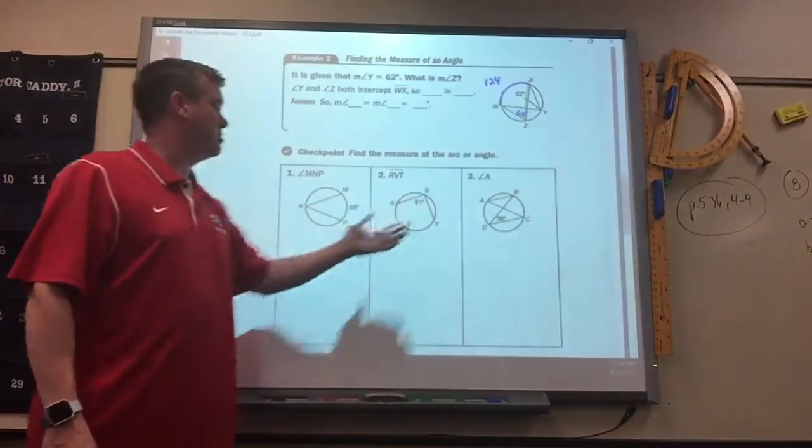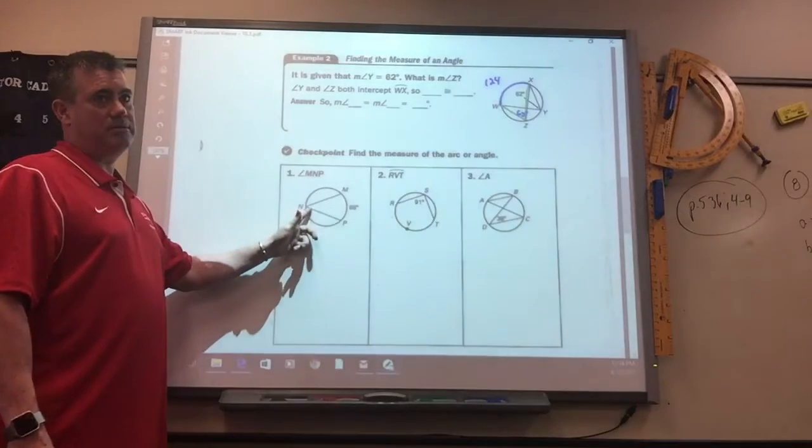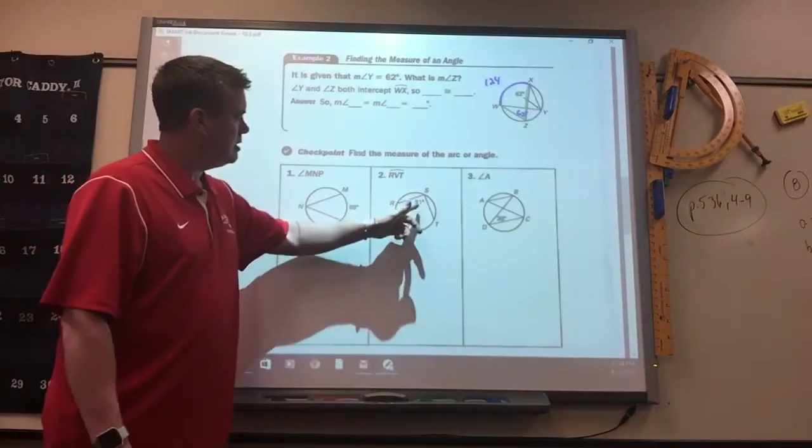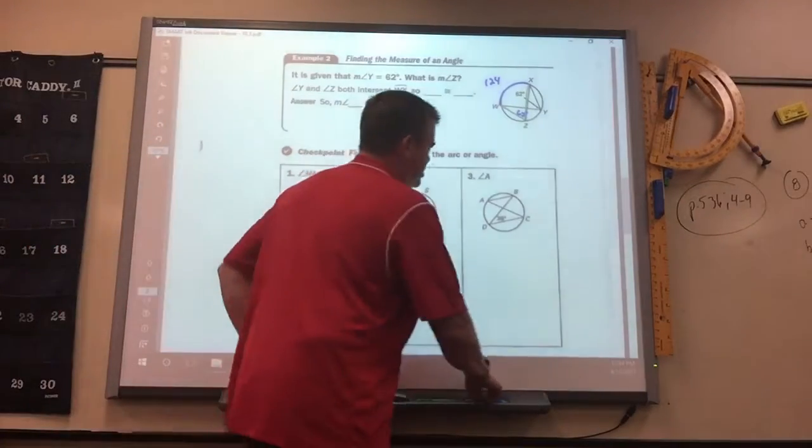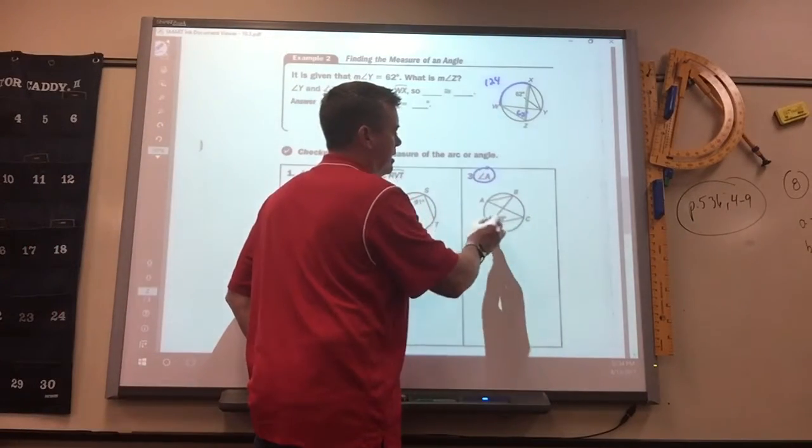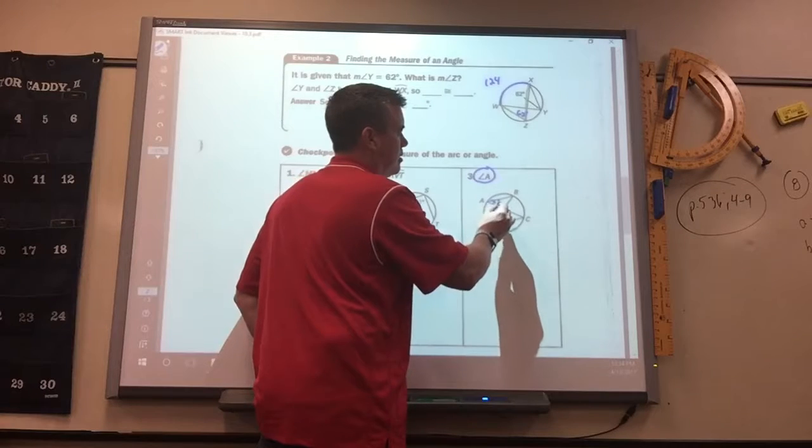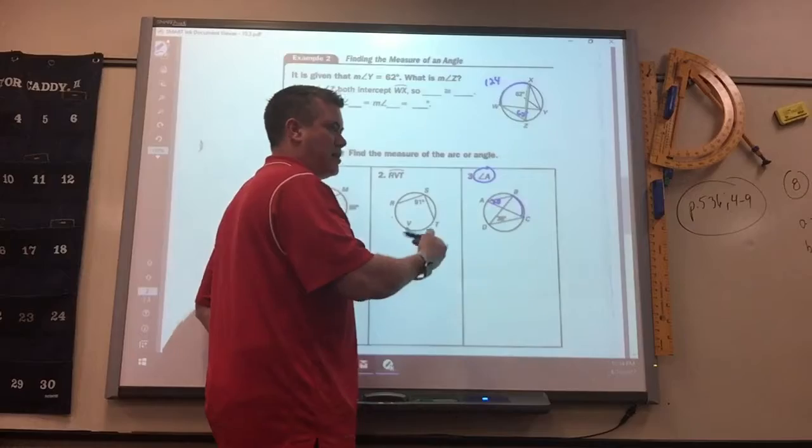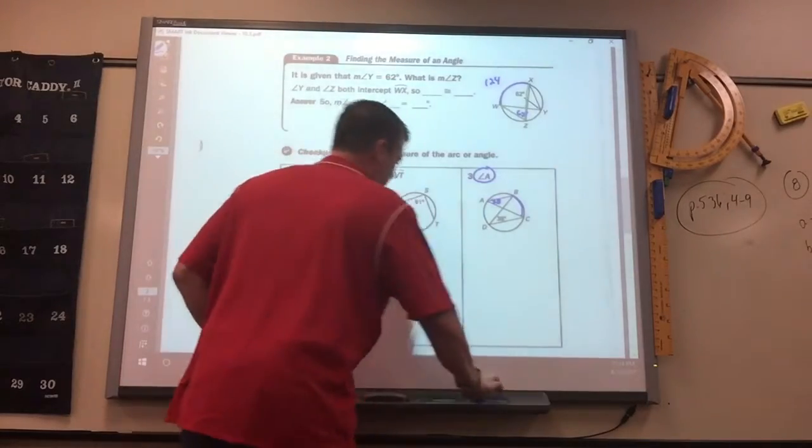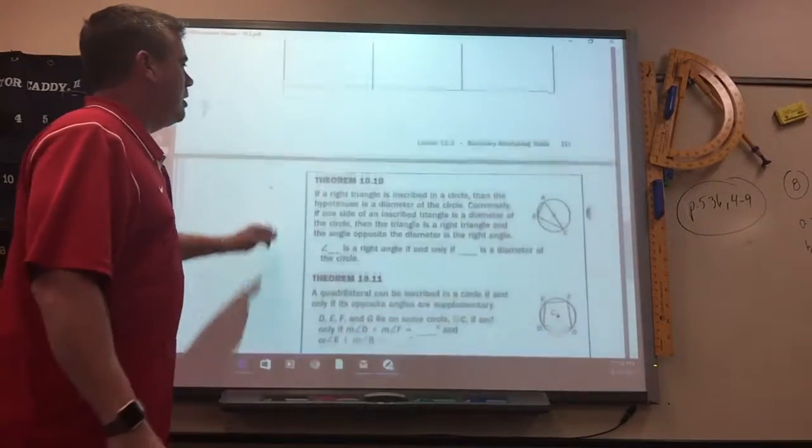So those are the three types. 88, 44. 91, 182. And if this is 38, they're looking for angle A. 38, because they both intersect that same arc. Cool. Okay? That's it. Now there's some shortcuts here.